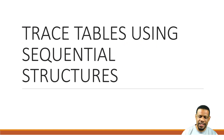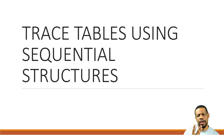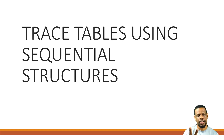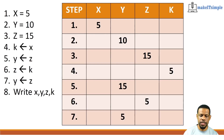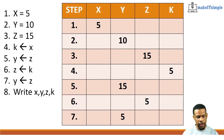Trace tables are done with three of your control structures. The first one is sequential, the next one is selection, and the next one is looping. We're going through the first one, which is sequential, so follow along.